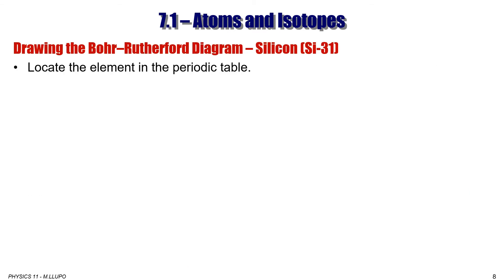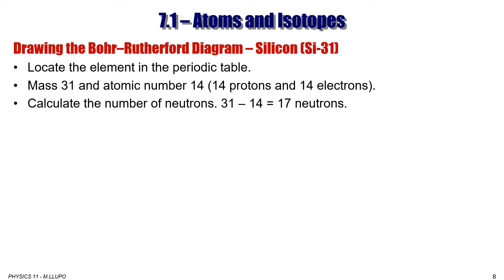Let's practice drawing a Bohr-Rutherford diagram of silicon. We locate element of silicon in the periodic table, which is the fourteenth. So the number 14 is 14 protons, and obviously it is 14 electrons, and atomic mass is 31. We can calculate number of neutrons by subtracting 14 from 31, and we get 17 neutrons.